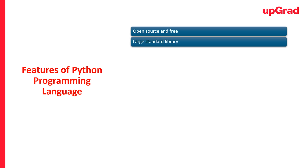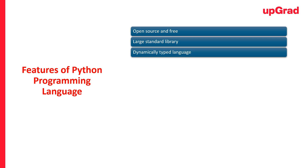At number two, we have large standard library. Python boasts an extensive standard library consisting of numerous packages and modules such as itertools, functools, and operator. These modules provide a rich repository of standard functionalities, saving developers time and effort. At number three, we have dynamically typed language. In Python, variable data types do not require explicit declaration — the interpreter dynamically determines variable data types during runtime, following the duck typing principle, simplifying coding.